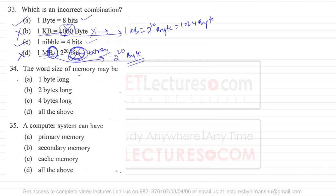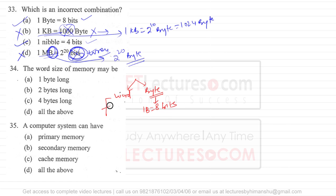Question number 34: the word size of memory — the word size can be equal to 1 byte, 2 bytes, or 4 bytes. Memory can be word addressable or byte addressable. The size of a byte is always fixed at 8 bits, but the size of a word is not fixed — it can be 8, 16, 32, or 64 bits depending on the system configuration. So the answer is all of the above.